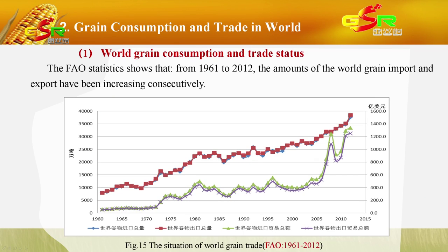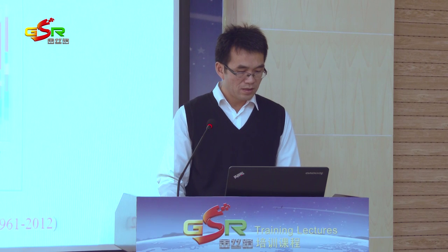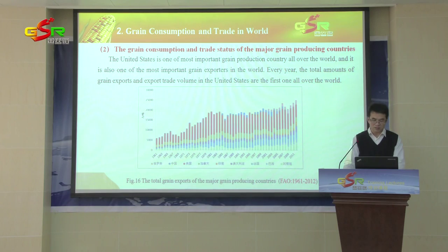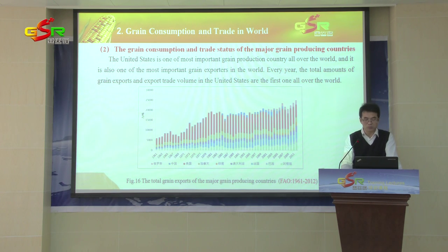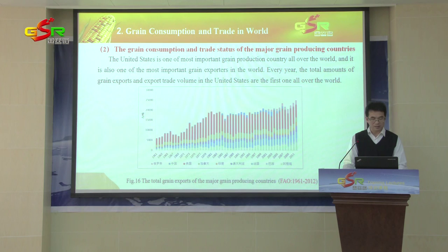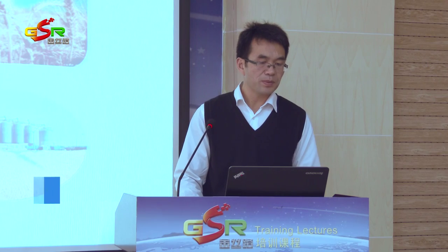China is one of the most important grain importing countries in the world. From the FAO statistics data, we can see that from 1961 to 2012, the average annual grain imports in China was about 12.8 million tons, accounting for 6.1% of the world's total annual average grain imports.